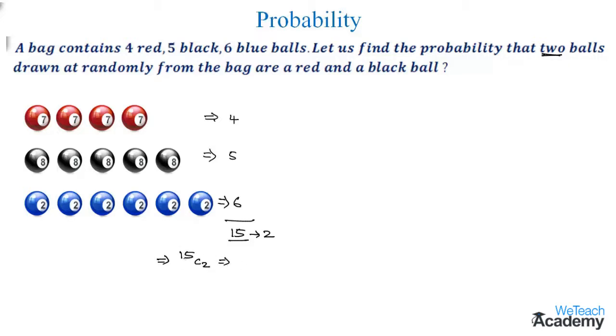That is its value would be 15 into 14 divided by 2. On simplifying this we get 15 times 7 which is 105. So I can select 2 balls from the total 15 balls in 105 ways.